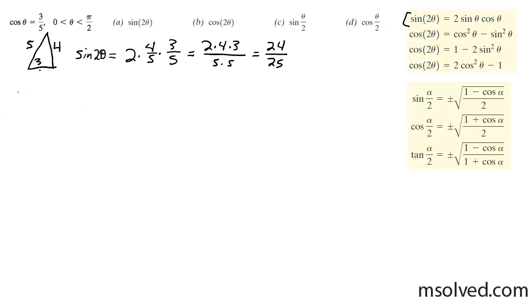All right, for the cosine 2 theta, I'm going to go ahead and you can use one of the bottom three down here, but I'm just going to use this top one. So I'm going to use the cosine squared, which is equal to 3 over 5 squared, minus the sine squared, which is 4 over 5 squared, which is going to be equal to 9 over 25, excuse me, minus 16 over 25, which is going to be equal to negative 7 over 25.